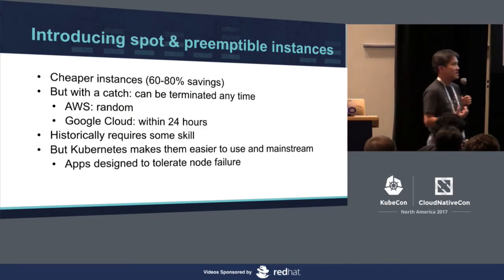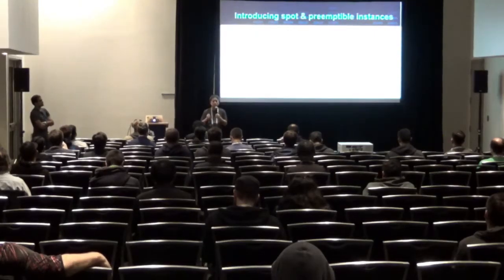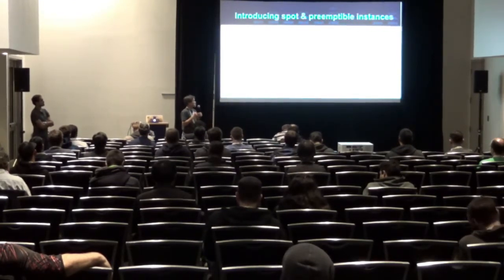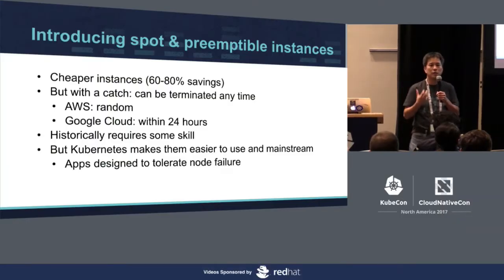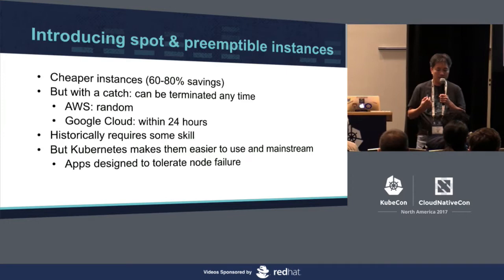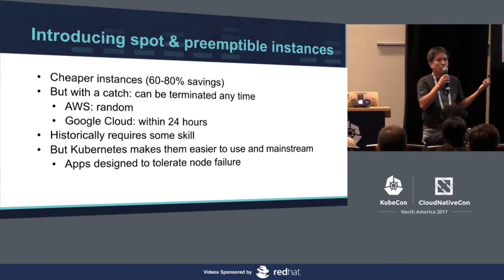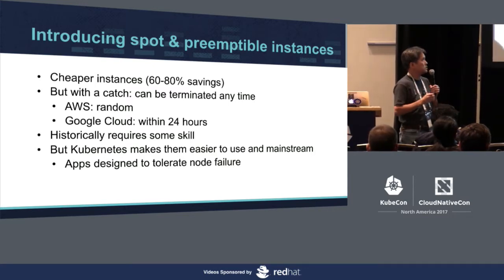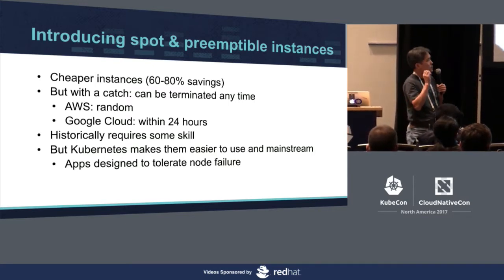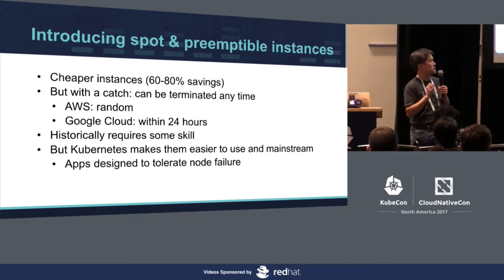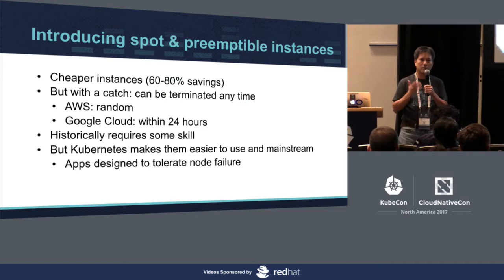Just like any sane business, we are always exploring ways to be super cost efficient without sacrificing our quality of service. In our journey, what we've discovered is one of the best ways to reduce costs is to take advantage of spot instances on AWS or preemptible instances on Google Cloud — they're kind of equivalent.